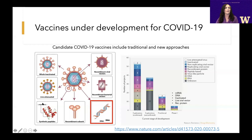There are also live attenuated vaccines, where you take the pathogen and introduce mutations that cause it to be weakened. It's able to replicate a couple times in your body, but it doesn't cause disease. The measles vaccine is a good example. By far, the majority of our vaccines are whole inactivated or live attenuated.